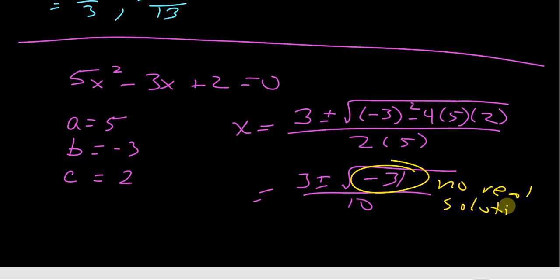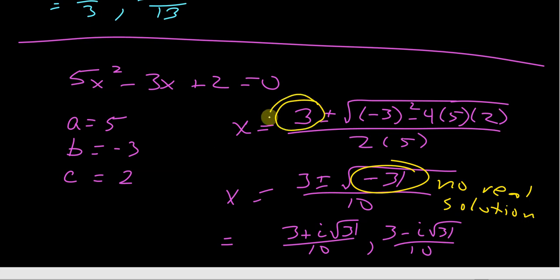But you can use complex numbers to do that, and you would just have 3 plus i square root of 31 over 10, and 3 minus i. So if you use complex numbers, you could write it this way, and then 3 minus i square root of 31 over 10. Okay, but what I really wanted to point out was this part right here.